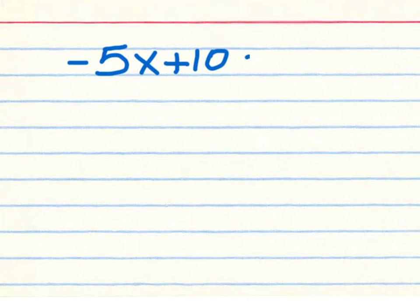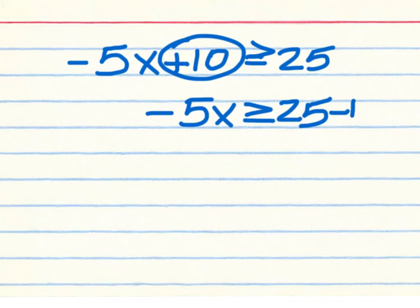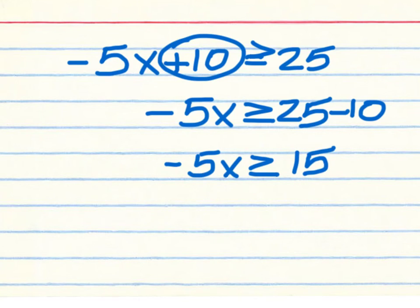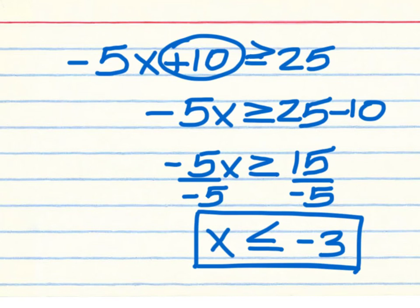In this case, you have negative 5x plus 10 greater than or equal to 25. Keep the negative 5x on the left and 25 on the right. Move the plus 10 and make it minus 10 — 25 minus 10 is 15. Now you have something other than a negative 1, but you still do it the same way: divide both sides by the number with x, which is negative 5. You're left with x and negative 3, but since you divided by a negative, you must flip the inequality sign. x less than or equal to negative 3.